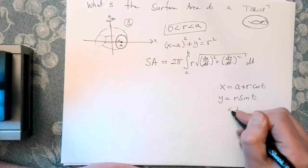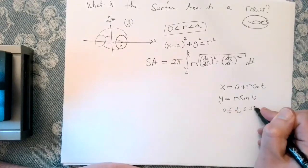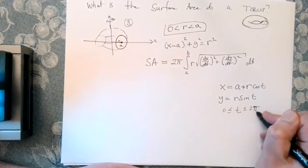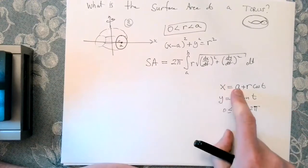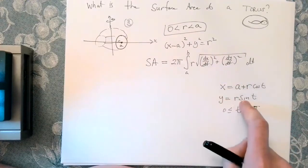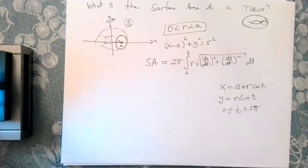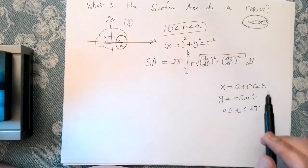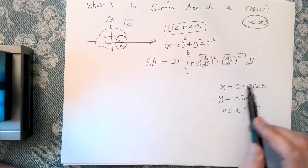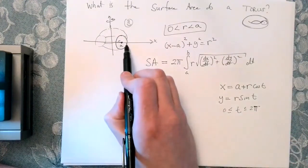And t goes from 0 to 2 pi. You can convince yourself this is fine. So it's fine for a couple reasons. Well, first of all, if I plug this in for x and this in for y, I'll get a Pythagorean identity on the left, and I'll have r squared equals r squared. So that would be true. Secondly, does this describe our circle? Well, it does, because if t is 0, I start here.